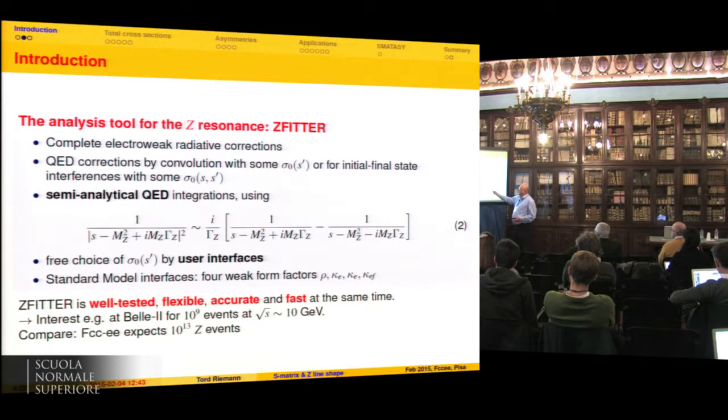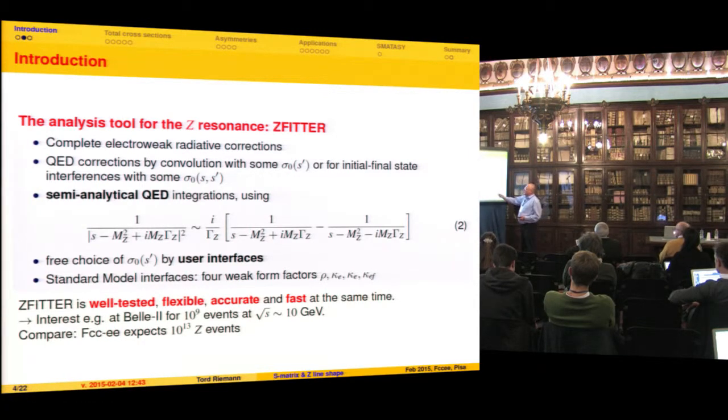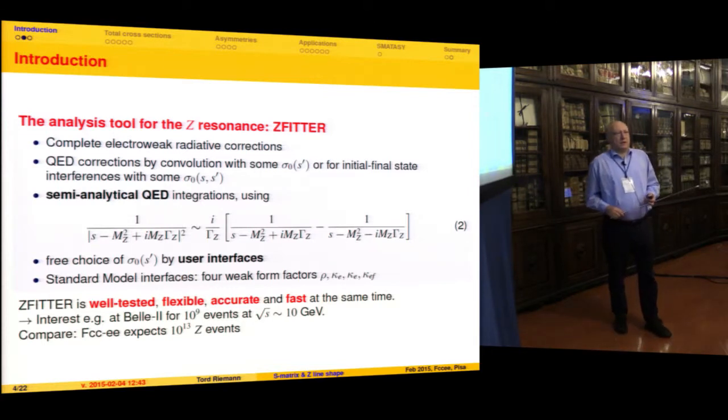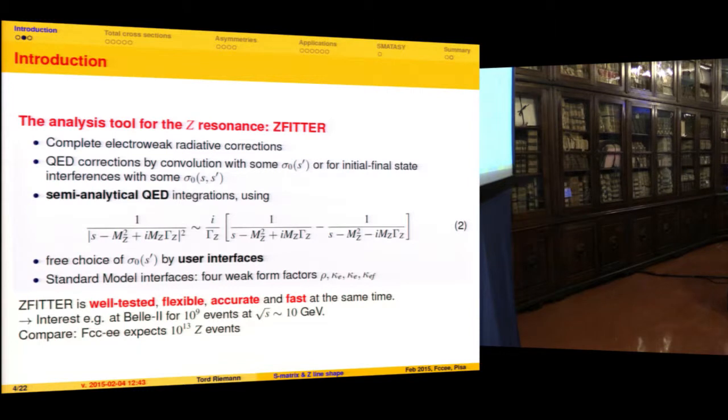ZFITTER is a very fast code because it contains semi-analytical QED integrations. One ingredient is that we were able to apply partial fraction decomposition of the modulus squared of the Z-boson propagator, linearizing it. Then it is possible to make many of the integrations in the complex S-plane. Functional theory for complex variables does not like modulus squares, but it likes fractions.